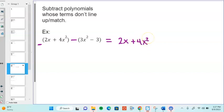But because there's a subtraction sign in front, this subtraction sign has to distribute. So we have a minus 3x squared and a plus 3.